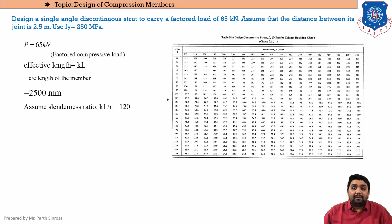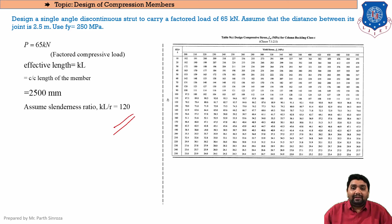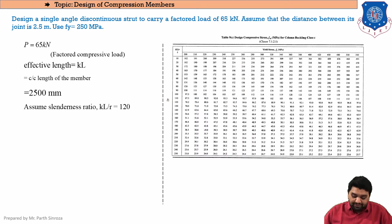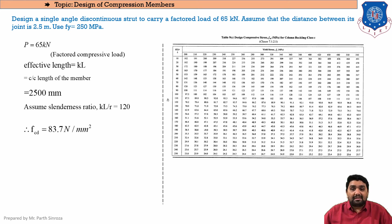In Table 9c, the first column gives the kL/r ratio and the first row gives yield stress fy. With our assumed kL/r = 120 and fy = 250 MPa, the intersection value gives fcd = 83.7 N/mm². This is our assumed fcd based on the initial assumption; the final fcd will be calculated later.